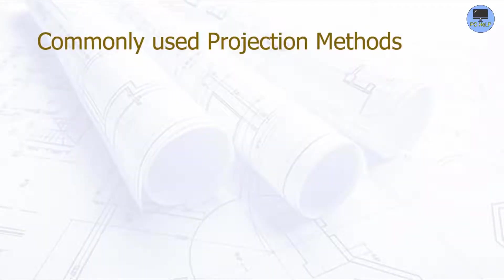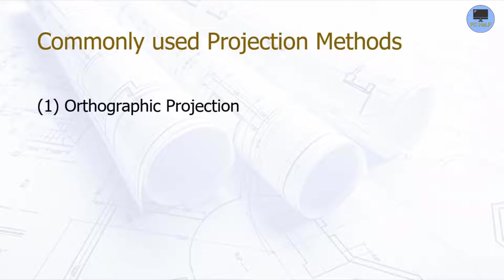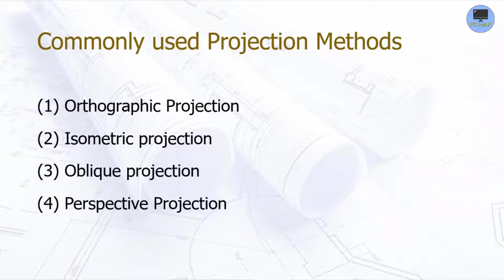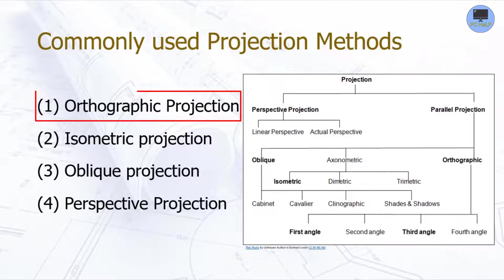In engineering drawing, there are four methods of projection that are commonly used: orthographic projection, isometric projection, oblique projection, and perspective projection. We will talk about only the orthographic projection here. Take a look at this tree diagram for the other projection methods for your information.